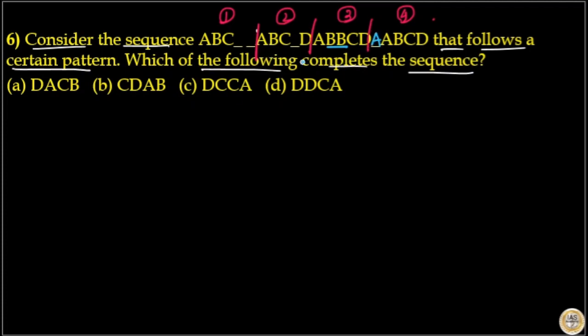Again, in the fourth set A repeated, third set B repeated. That means in the second set C will repeat and in the first set D will repeat. If you have doubt, check the first set: ABC is there, so the next letter will be D. So if I fill this letter with D, that means this letter is also D.